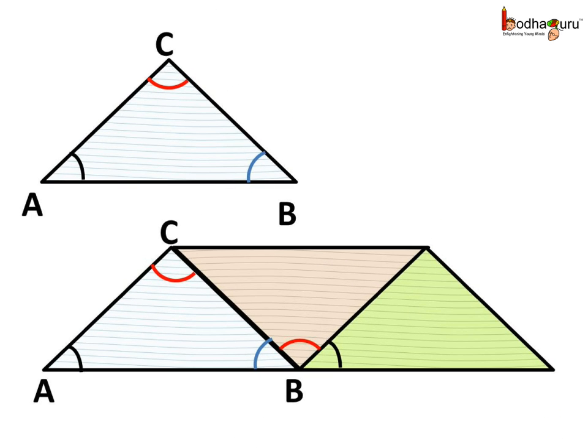Then, we bring the angle A of the third triangle near the angle C of the second triangle. Look, angle A, angle B and angle C together form a straight line.